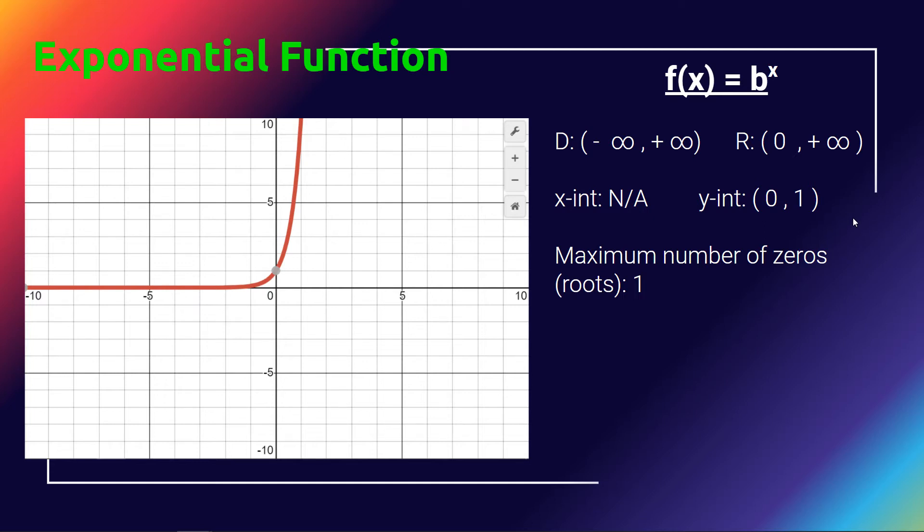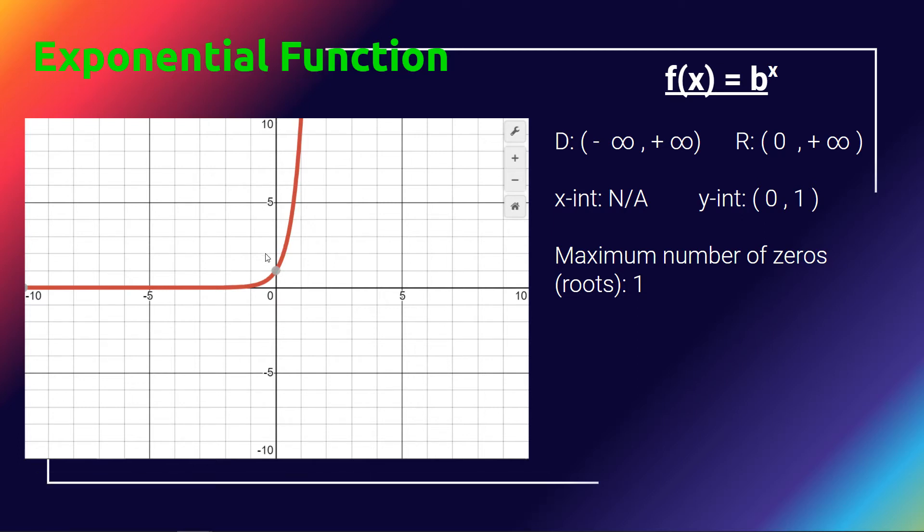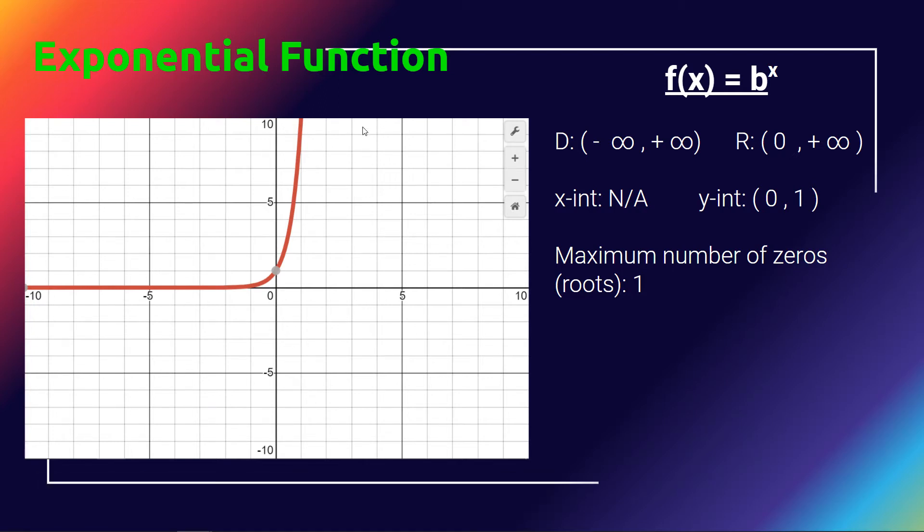There is a maximum number of zeros of 1, and that is only when it has been shifted down. When this graph has been moved down below the x-axis, say coming down to negative 5 and then growing up, at that point you will have an x-intercept, but not the parent function.